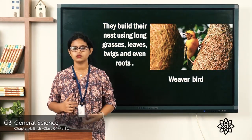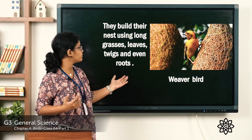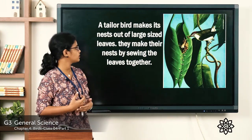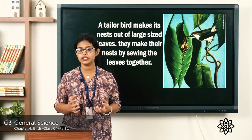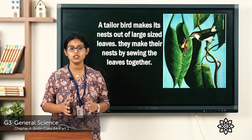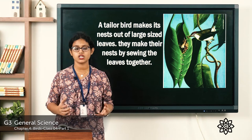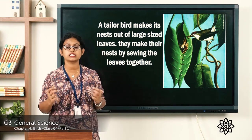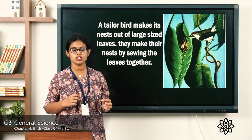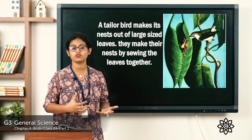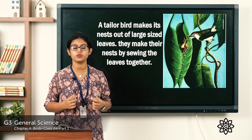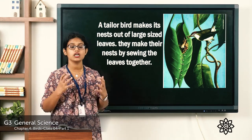The weaver bird weaves its nest using grass, leaves, and similar materials. The tailor bird is very interesting — it makes its nest out of large-sized leaves. The tailor bird stitches the leaves together, as you can see in the picture, and builds its nest. They stitch the leaves together with cotton thread or thread from a spider's web.